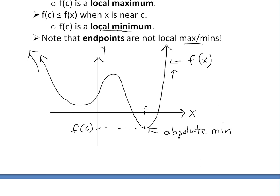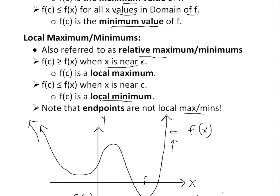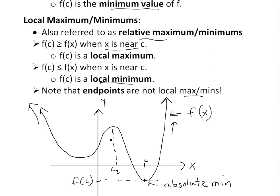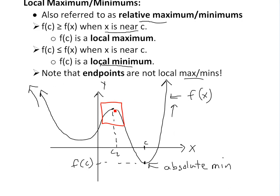I'll write that down: absolute minimum. Now when we look at local values, you have to look at an interval near the c value — or let's call this one c2. As you can see, this is a local maximum right here, and the reason is anywhere near this point this value is always greater than anywhere near it. If I draw with the red pen, anywhere near it — let's draw a box to get the domain involved — anywhere near this c2 value, this is always greater than any of these values. But the endpoint right here, we can't say that's a local minimum because endpoints are not local max or min. So this is a local max.